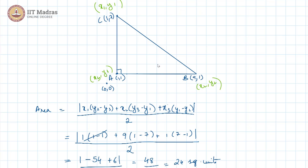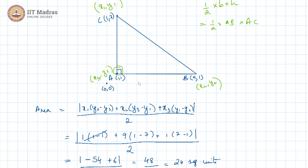However, the same problem could be approached in a slightly different way. If I observe that this is a right-angle triangle, I could just do half into base into height. Here the base would be the length AB, and the height would be the length AC. Since AB is horizontal, the length is x2 minus x1 which is 8, and AC is completely vertical so the length is the difference in y-coordinates, which is 6. Half into 8 into 6 gives us 24 square units. This worked out because our triangle is a right-angle triangle.